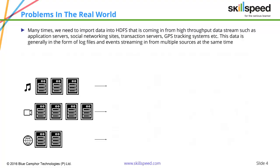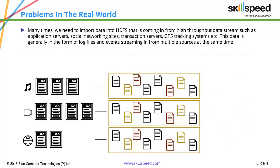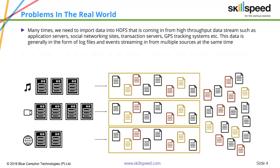For example, think about something like application server logs, social networking files, or GPS tracking systems. All these systems continuously generate data. If you look at a web server, a web server produces log files every second — maybe multiple log files every second.